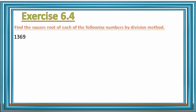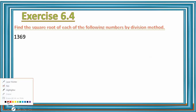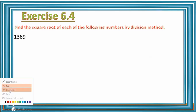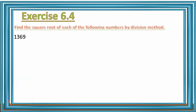We continue with the number 1,369. First, write the number 1,369. Then group the digits into pairs of two from right to left, and draw a division line.